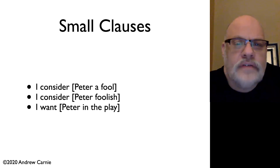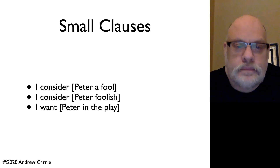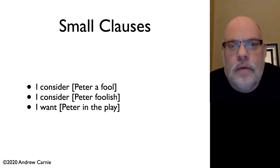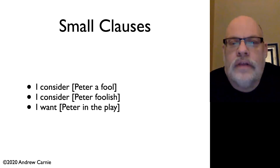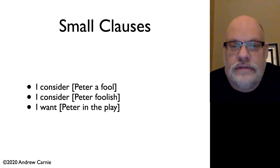If these clauses were standing on their own, we would have to put the verb 'to be' in. We'd have to say 'Peter is a fool,' 'Peter is foolish,' or 'Peter is in the play.' But when it shows up without that verb 'to be,' we have what we call small clauses. Small clauses are essentially defined by their lack of any kind of tense inflection or verbal structure.